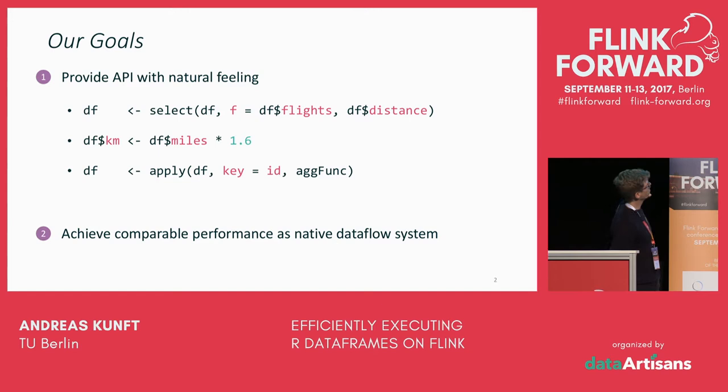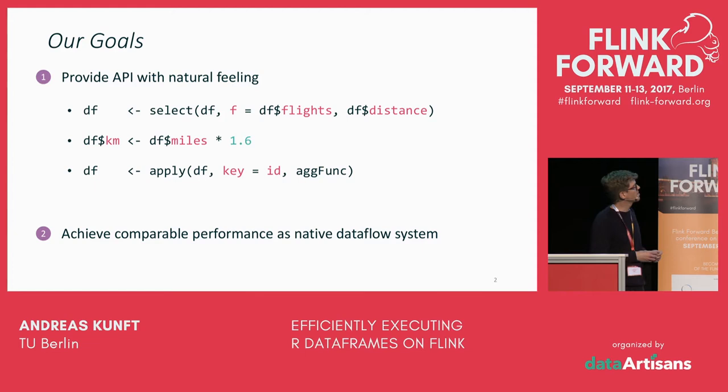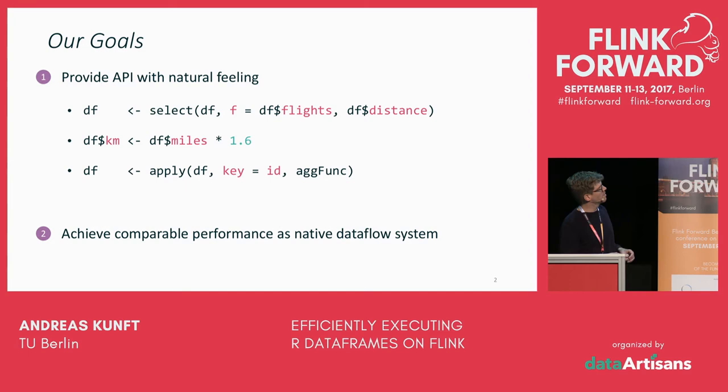To motivate our goals: the first goal was to write an efficient, natural API for R users, so that you don't have to deal with datasets and flat map, map, aggregate operations, but more like real R syntax. In the first line you see a select over the data frame DF, where you specify that out of a data frame with, say, 10 columns, you only want the columns distance and flight.